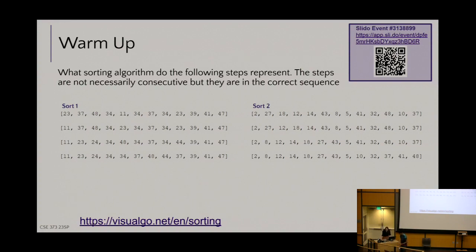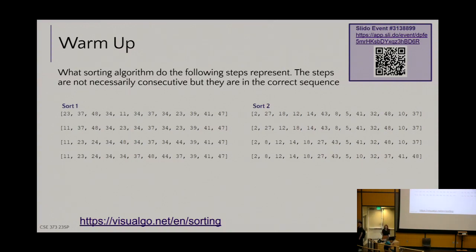We're going to start with something hopefully familiar from exercise six. Here are two separate sorting algorithms with some intermediary steps. The first line is the very initial state, and the subsequent lines are not necessarily consecutive, but in order, showing different states of the algorithm. Go ahead and look at these two different algorithms and see if you can determine which algorithm is which.